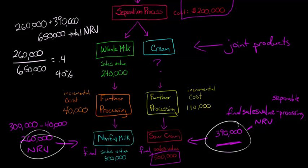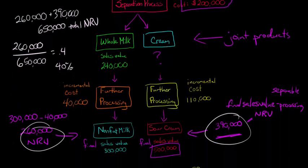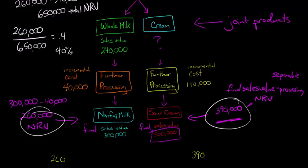And now what we'll say is that of those costs that need to be allocated, the $500,000 in joint costs, we'll take 40% will go to the nonfat milk, and then 60% of that $500,000 will go to the sour cream.